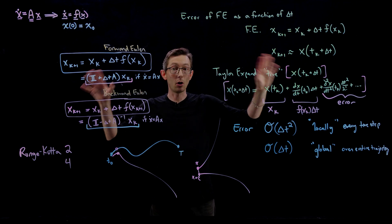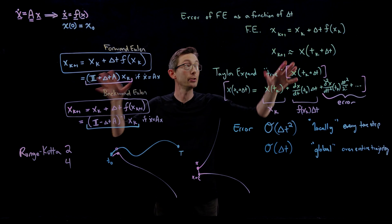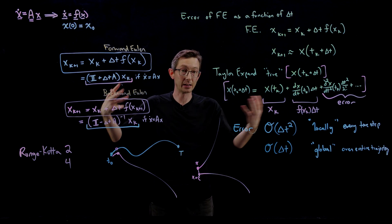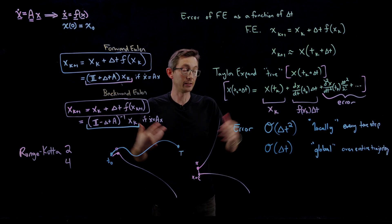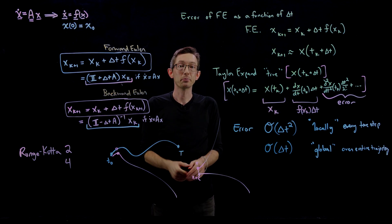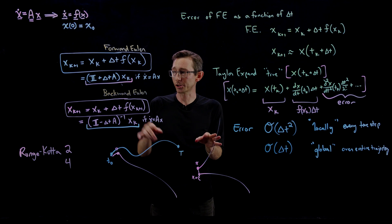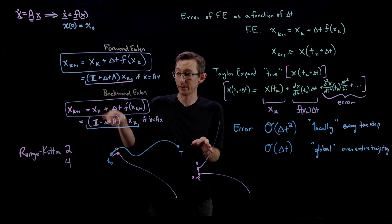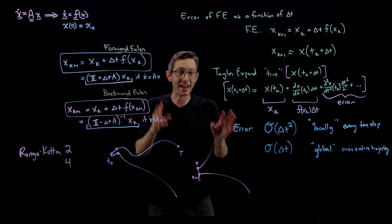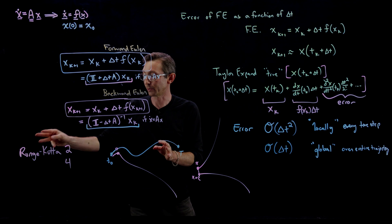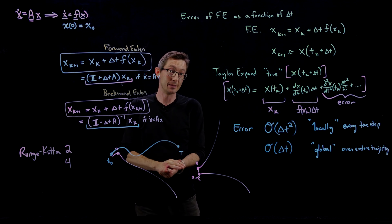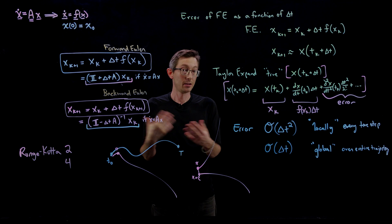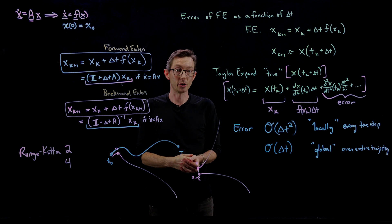Homework exercise: do this exact same Taylor series analysis for backward Euler and convince yourself it scales the same way. In the next lecture, I'm going to look at the stability of these integrators based on eigenvalues. After that, we'll derive the second and fourth order Runge-Kutta schemes, which are much more accurate and have better properties in general.